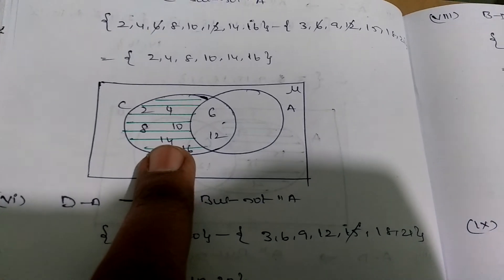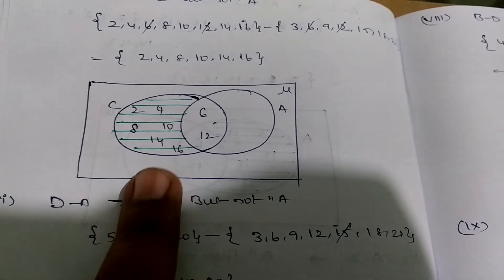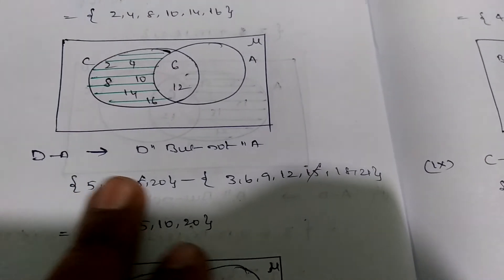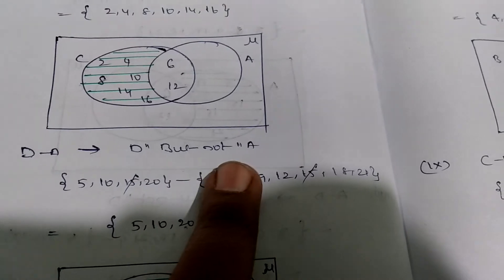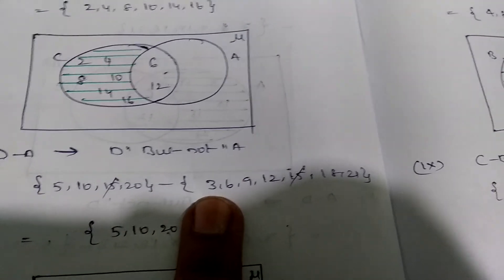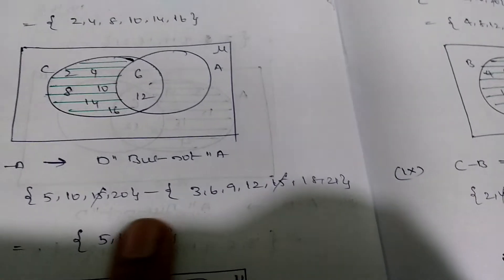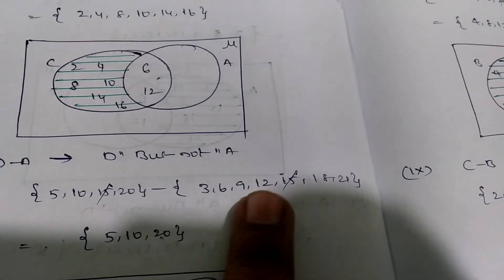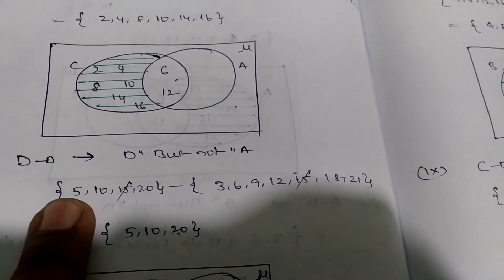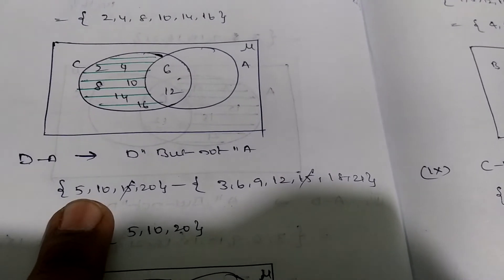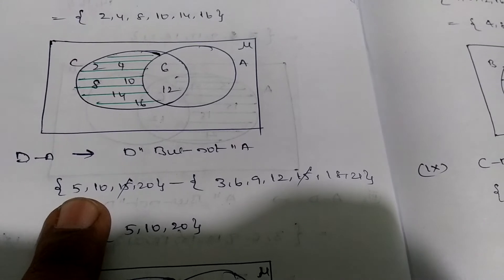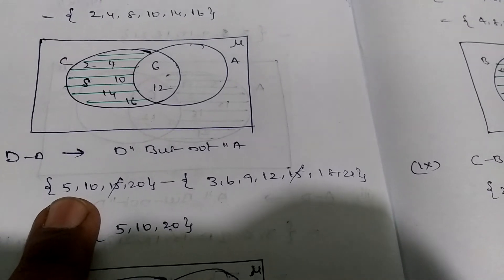Similarly, D minus A means D but not A. In the multiples of 5 and multiples of 3, only 15 is repeated. So mention only the elements other than 15 in set D.